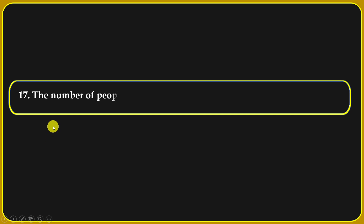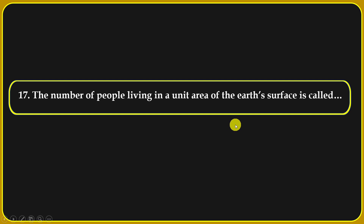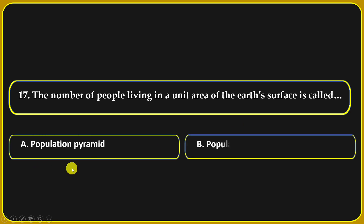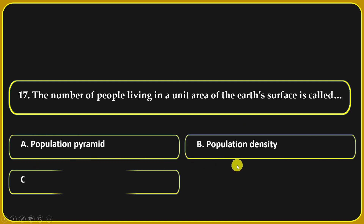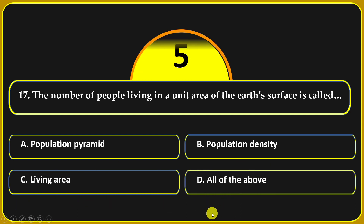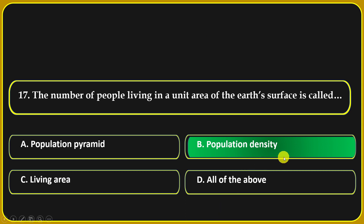The number of people living in a unit area of the earth's surface is called: population pyramid, population density, living area, or all of the above. Population density is the correct answer.